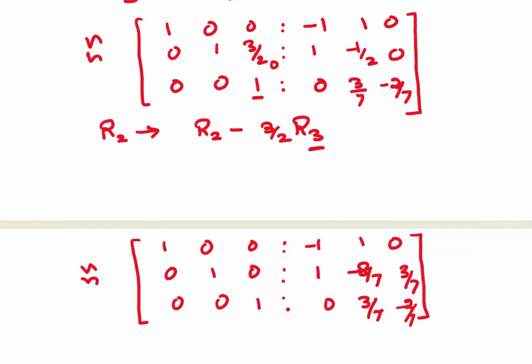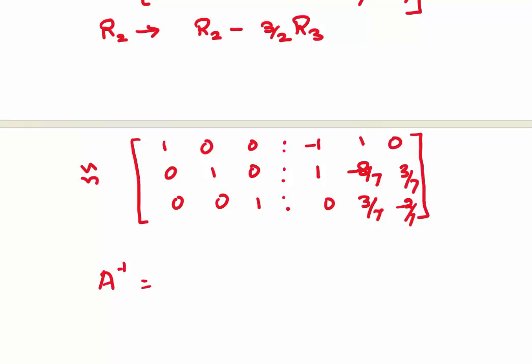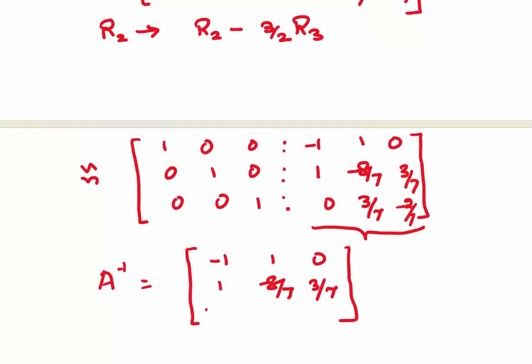So this is the inverse — what we have on the right side. A⁻¹ = [−1, 1, 0; 1, −8/7, 3/7; 0, 3/7, −2/7]. Again, if you have a doubt whether the answer is correct, you can multiply A⁻¹ by A from any side and check whether you get the identity matrix.